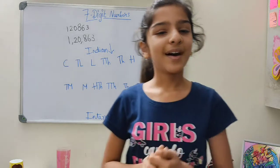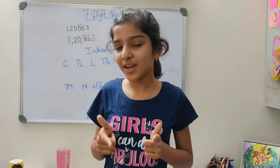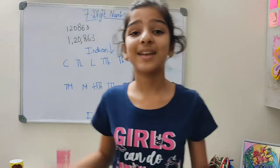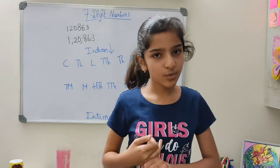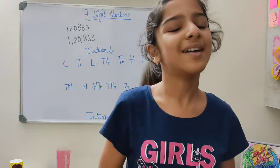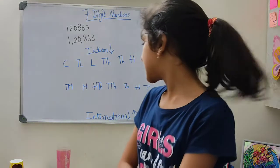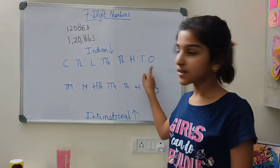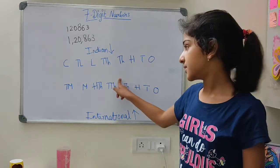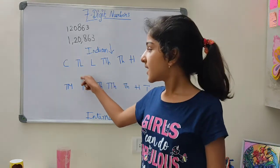Here I have the Indian and international numbering systems. There are two types: the Indian system, used in India and countries such as Nepal and Bangladesh, and the international system, used in the US, Australia, Europe, and other countries. The Indian system goes: ones, tens, hundreds, thousands, ten thousands, lakhs, ten lakhs, and crores.